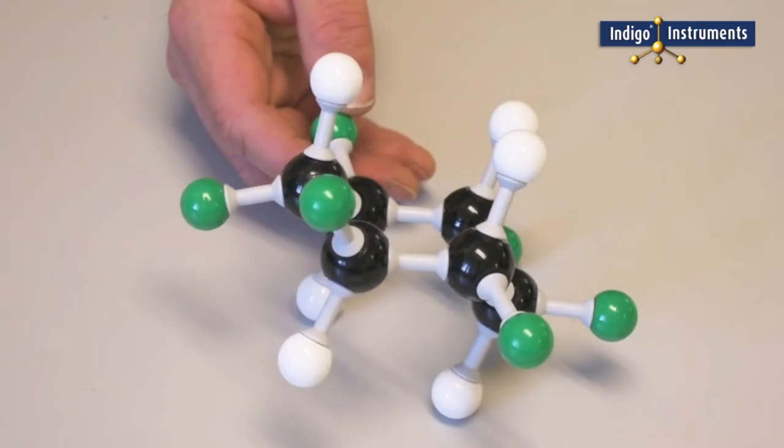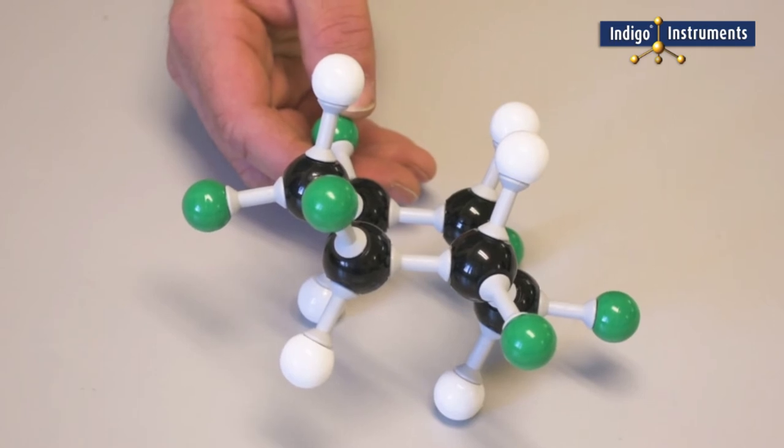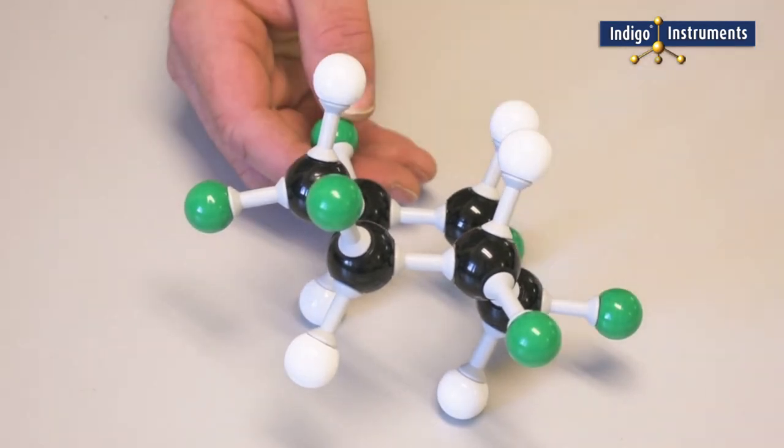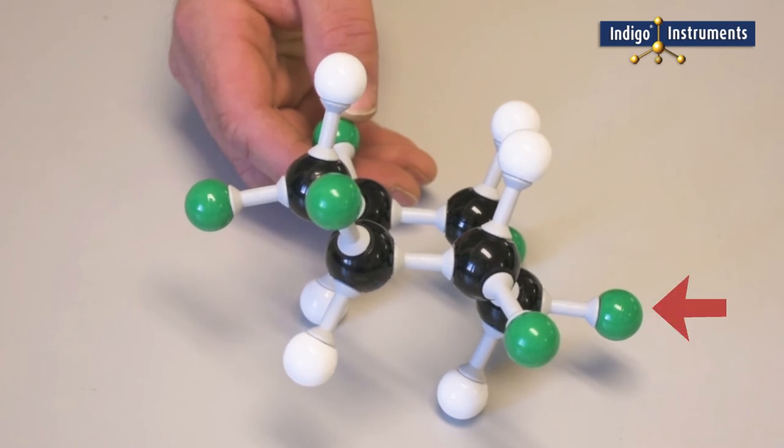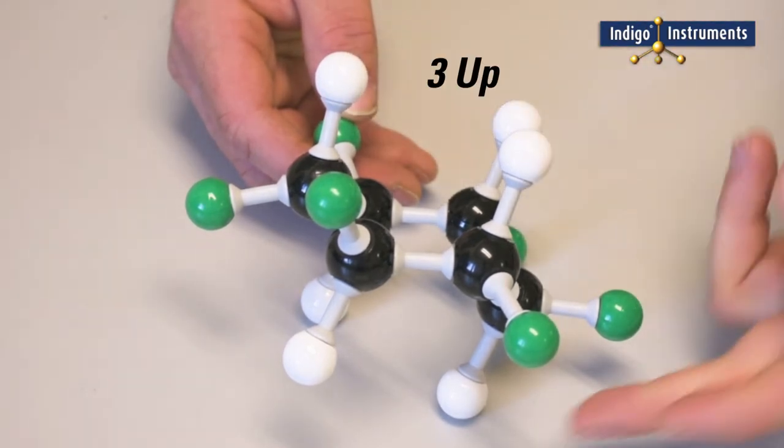The ring flip or ring inversion takes one chair conformer and flips it to the other chair conformer of cyclohexane. We show white H atoms and green halogen atoms to designate axial and equatorial locations.